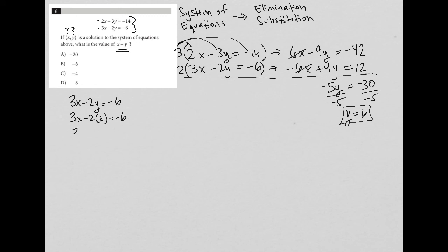When I simplify this, I get 3X minus 12 equals negative 6. Add 12 to both sides here, and I have 3X equals positive 6, and divide by 3, and I get X is equal to 2.